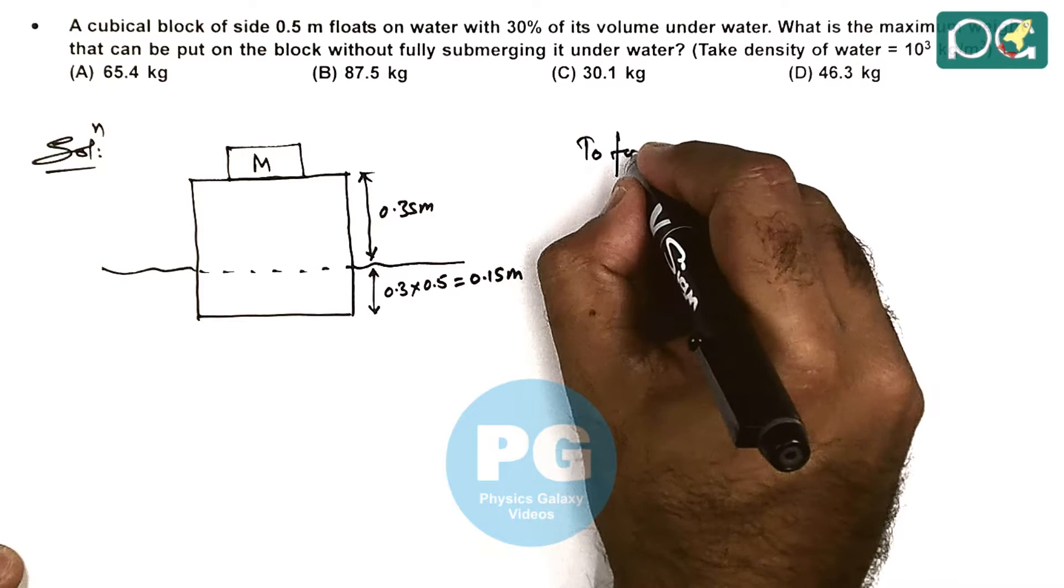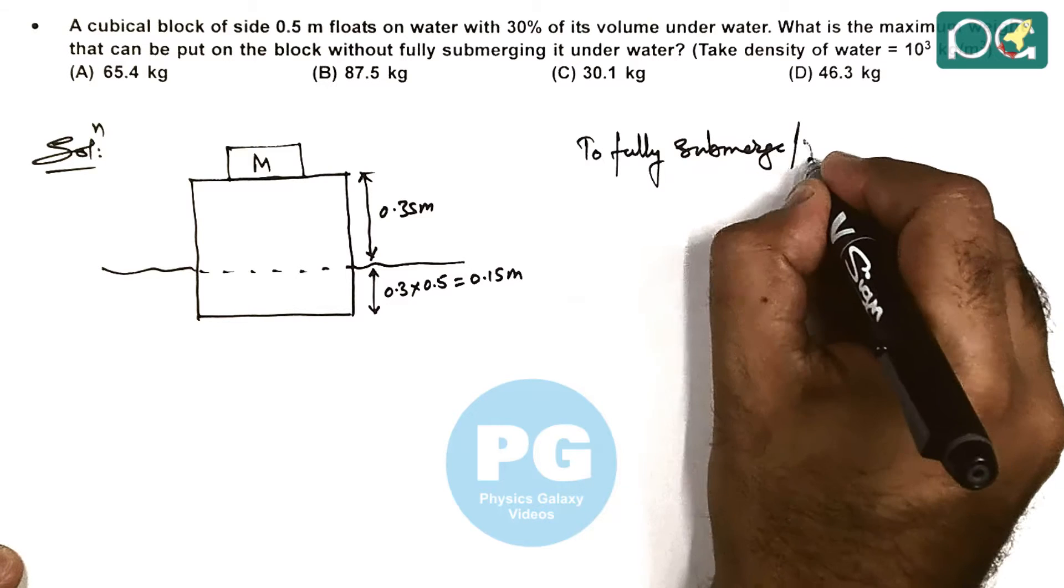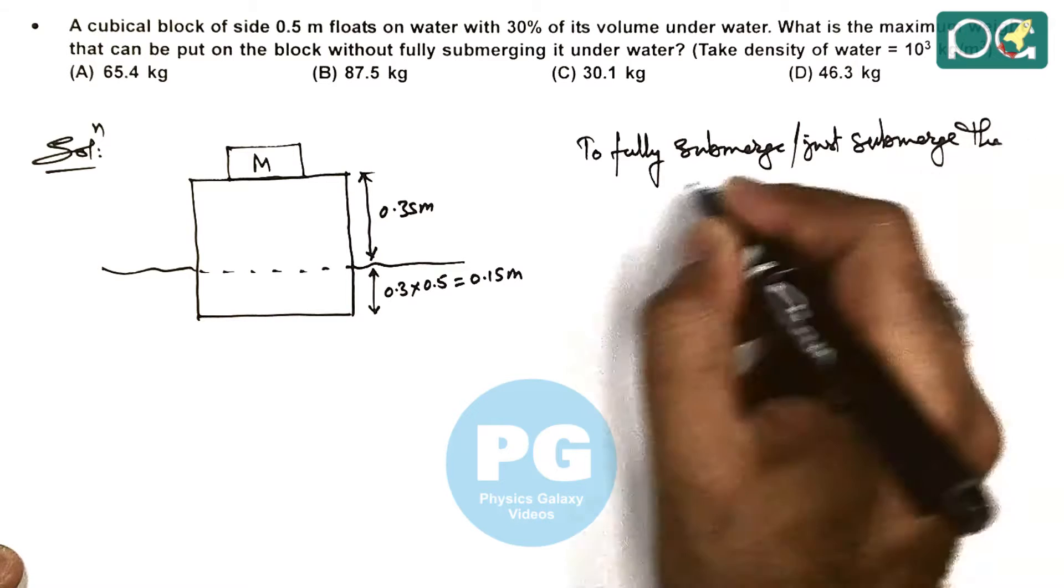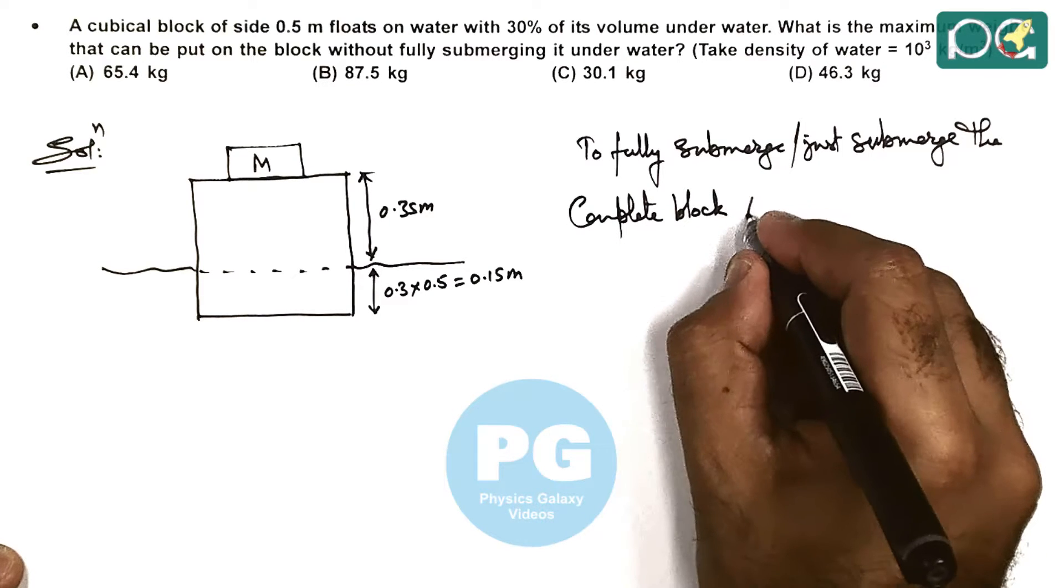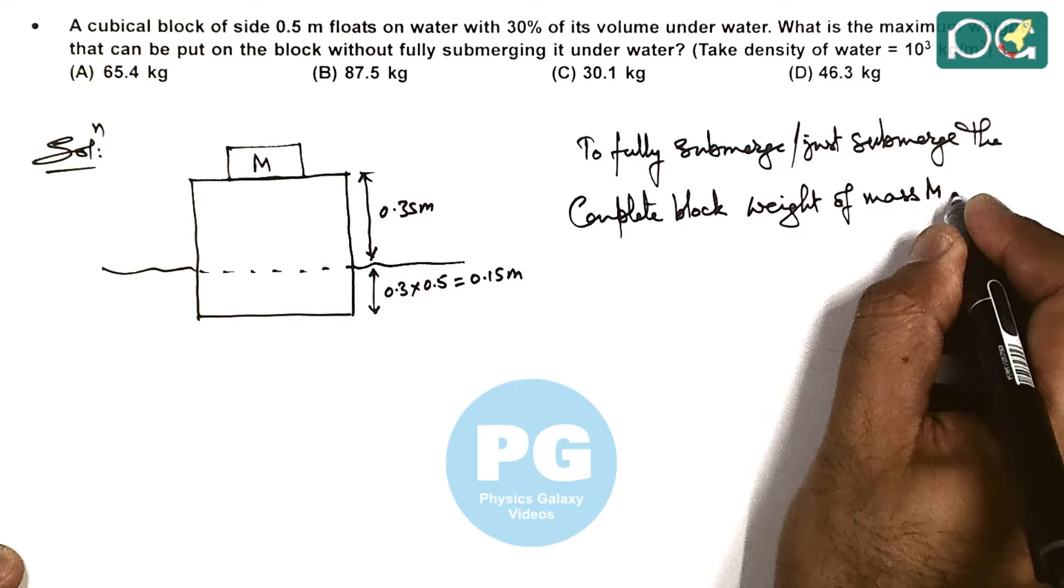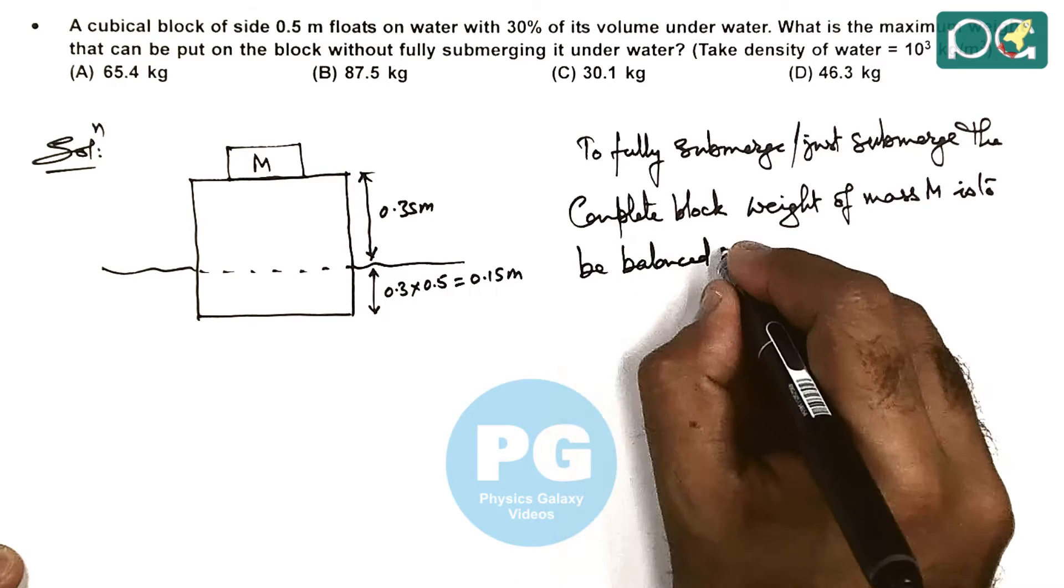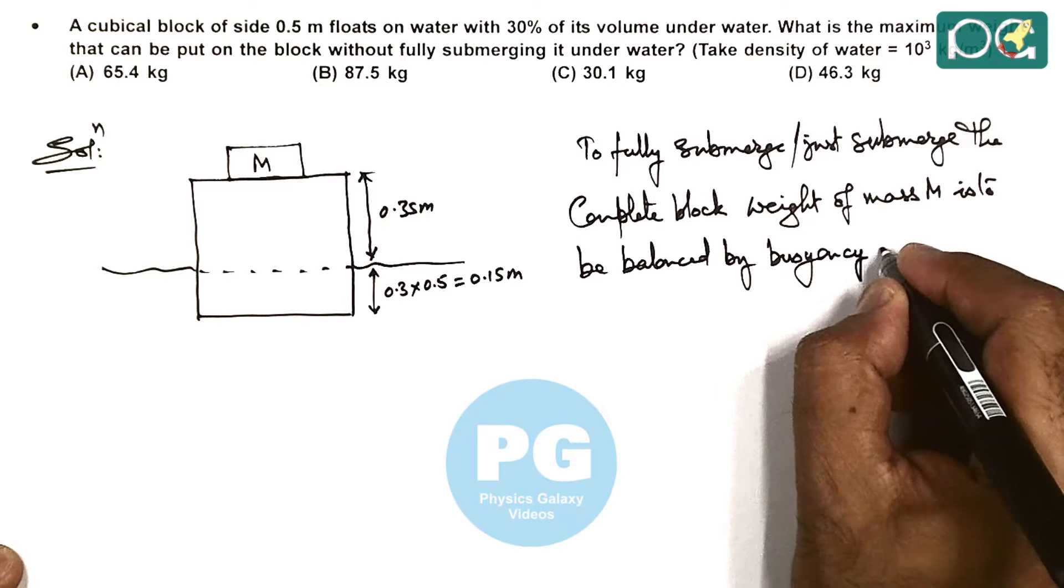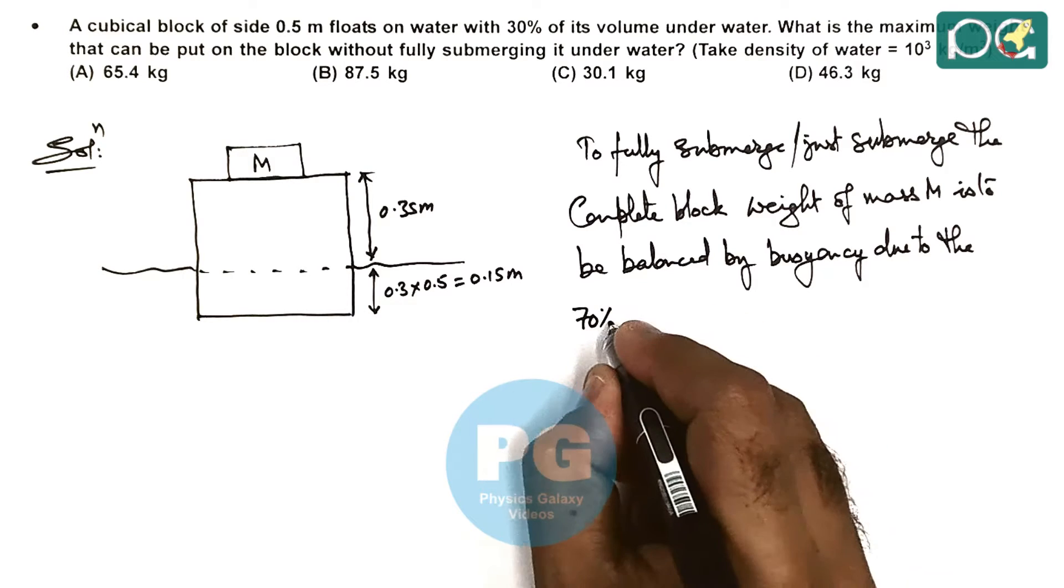So we can write: to fully submerge or just submerge, the complete weight of the block plus the weight of mass M is to be balanced by buoyancy due to the 70% part of cubical block outside initially.